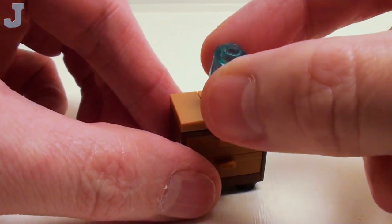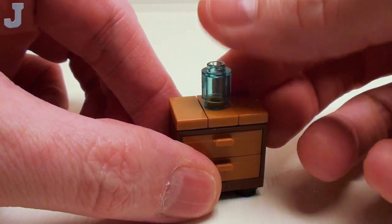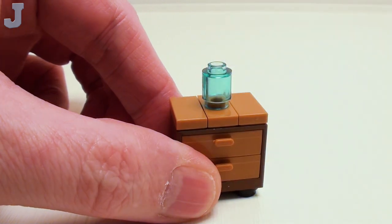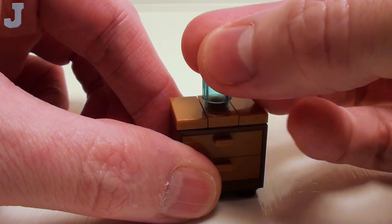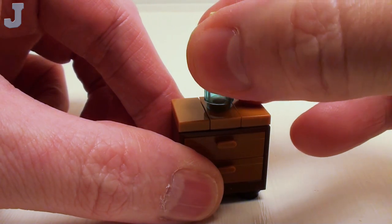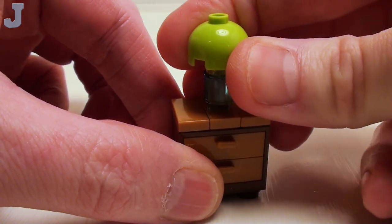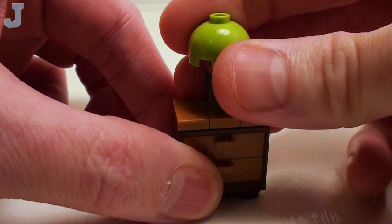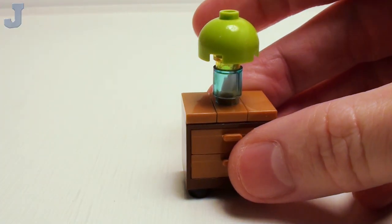Now for our little lamp, let's take a round brick, set that there, and a transparent yellow stud for a little light bulb, and a 2x2 dome with stud. Makes a great lampshade. Let's make two of these.